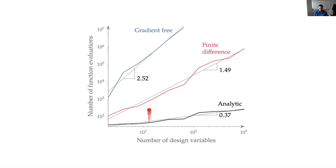What we see is a gradient-free curve, a finite differencing curve using gradient-based, and a curve using exact derivatives such as algorithmic differentiation or implicit analytic methods. This is not the full picture because function evaluations alone don't tell us everything about cost, but it's a rule of thumb to understand trade-offs. On this log scale, for smaller numbers of variables — say 10 to 20 — the differences are within an order of magnitude or two and are generally not a big determining factor. We also have to consider developer time.